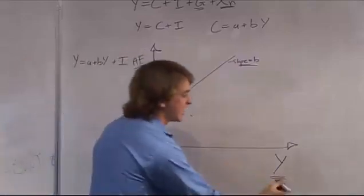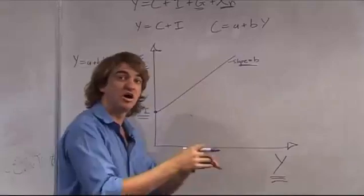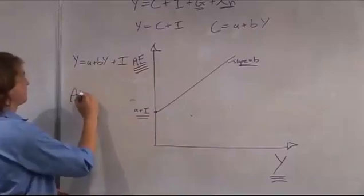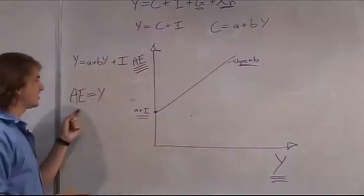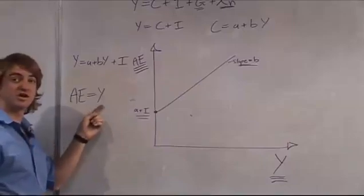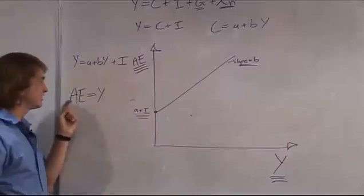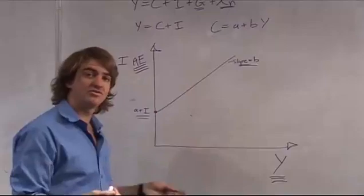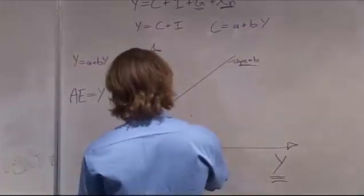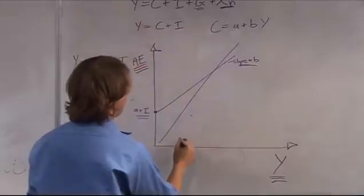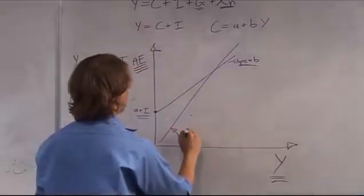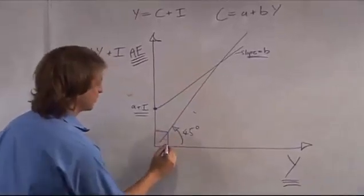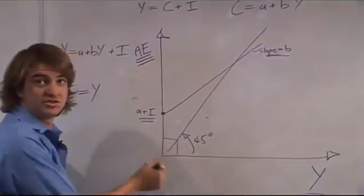So the vertical axis is the value of goods that we want to buy — how much money we're spending — and the horizontal axis is how much is actually produced. Equilibrium is where AE = Y: the amount you spend on goods equals the amount of goods produced. To find the point where AE = Y, you have to draw a 45-degree line.